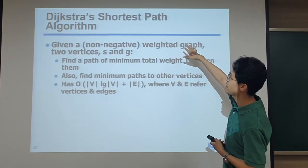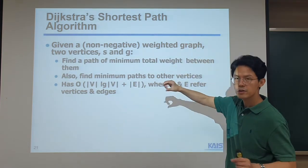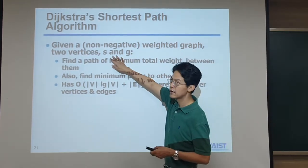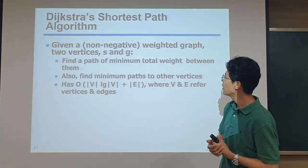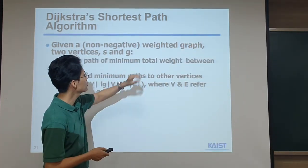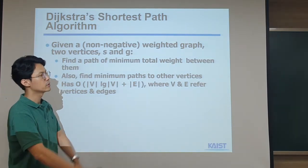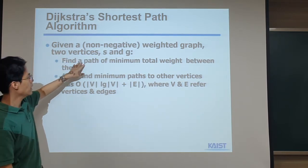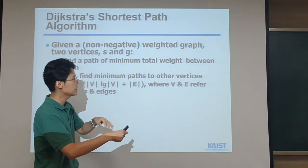A more common technique is Dijkstra's shortest path algorithm. Given a weighted graph with non-negative edge weights representing travel distance, this algorithm finds the path with minimum total weight. It computes minimum paths between many nodes, not just start and goal. The time complexity is O(V log V + E), which for N vertices is effectively an O(N log N) algorithm — very common in computer science.